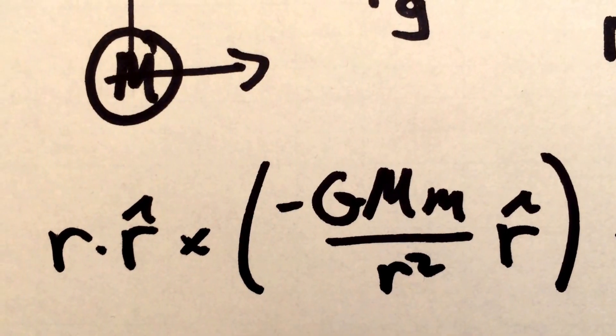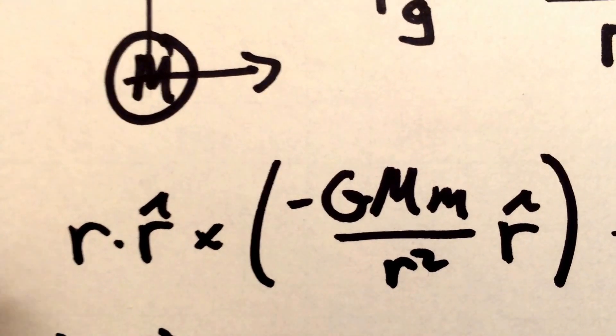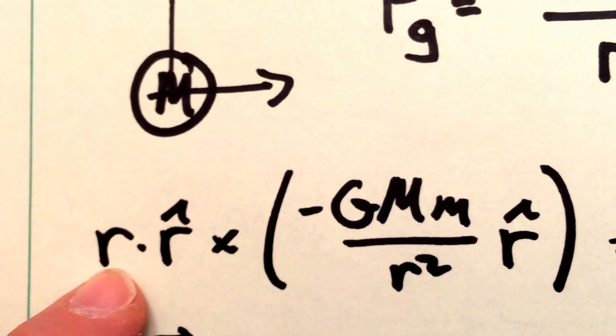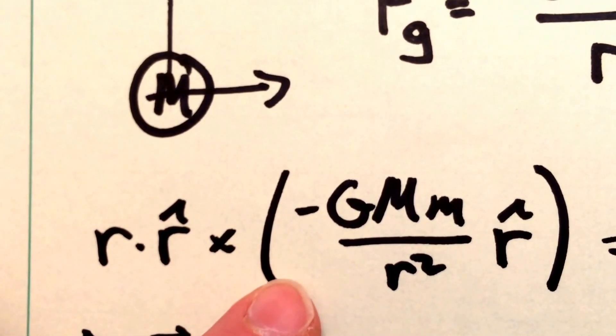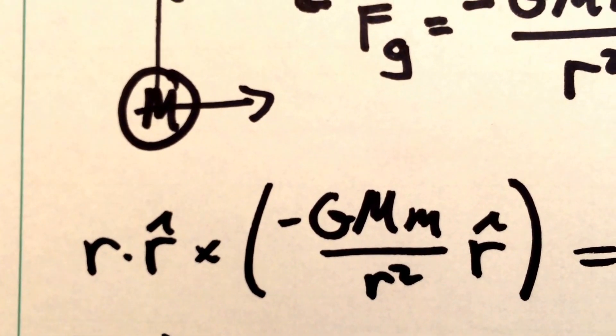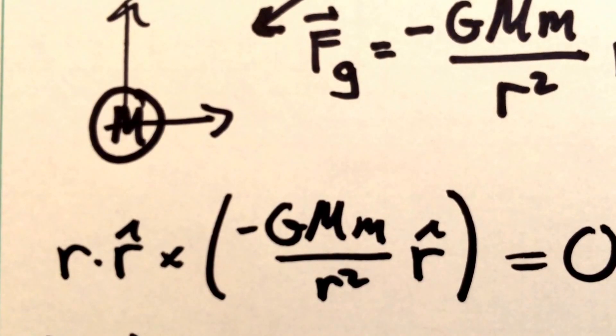So we want to calculate the torque due to this force. We need to take the position vector, scalar r times r hat, so that's just the r vector, crossed into the gravitational force. And of course, because the gravitational force lies along the radius vector, this cross product works out to be zero.